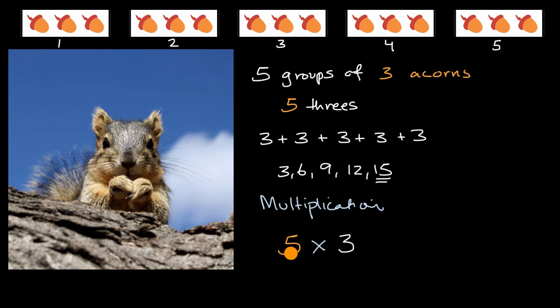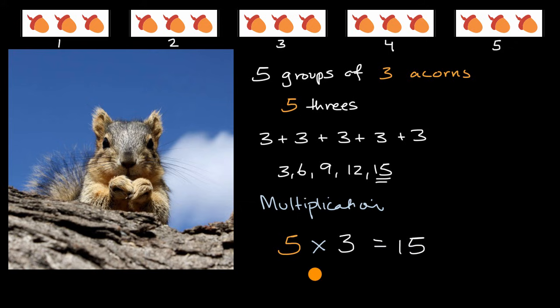So when someone says five times three, you could view that as five groups of three, or you could view that as five threes, or you could view that as three plus three plus three plus three, or you could view that as 15. There's a lot of practice on Khan Academy to work through this and make sure you get the underlying idea. But as you'll see, this is perhaps one of the most useful concepts that you might learn in your entire lives.